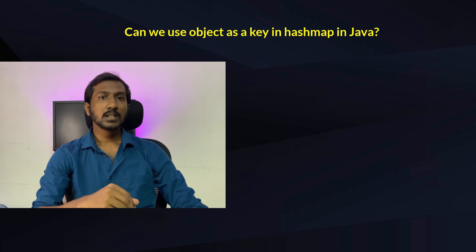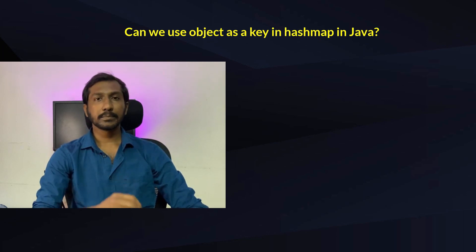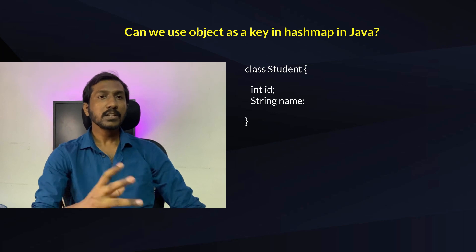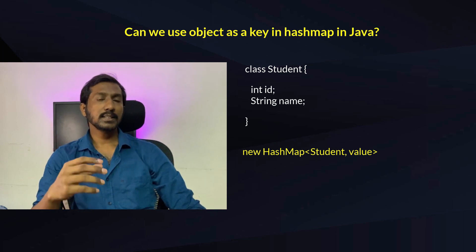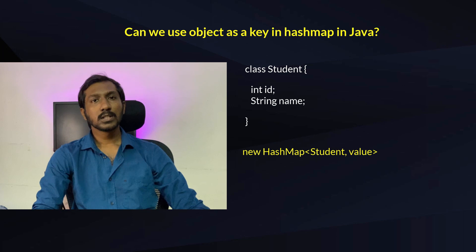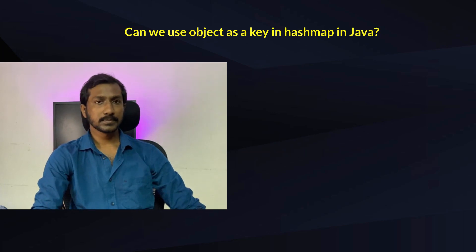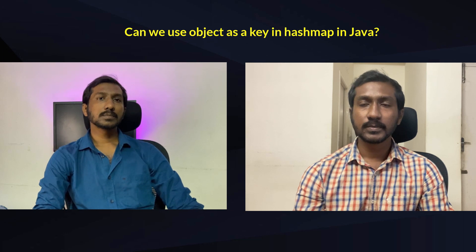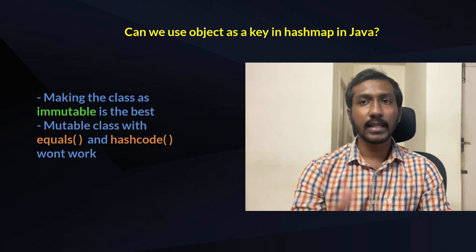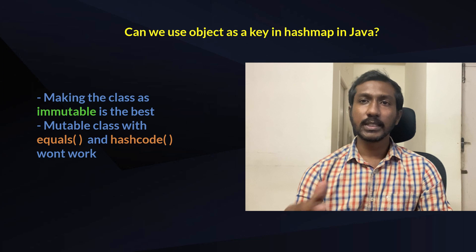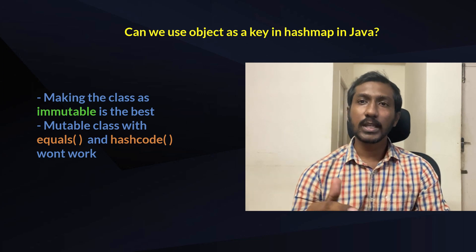Consider a Student class with student ID and student name. Can we use this as a key for a HashMap? Yes, we can use a user-defined class as a HashMap key. For that, we must override the equals() and hashCode() methods in that class, so that every object is treated as unique and the key remains unique.